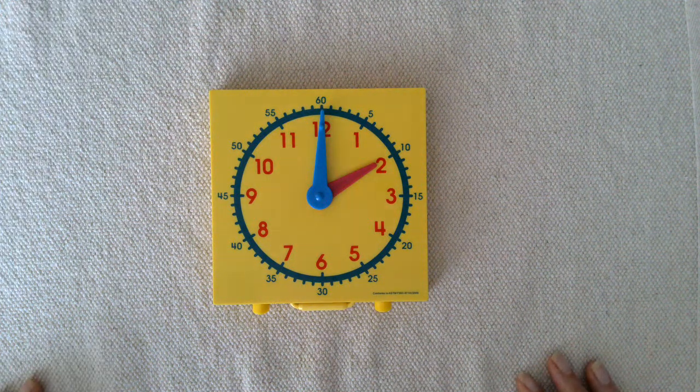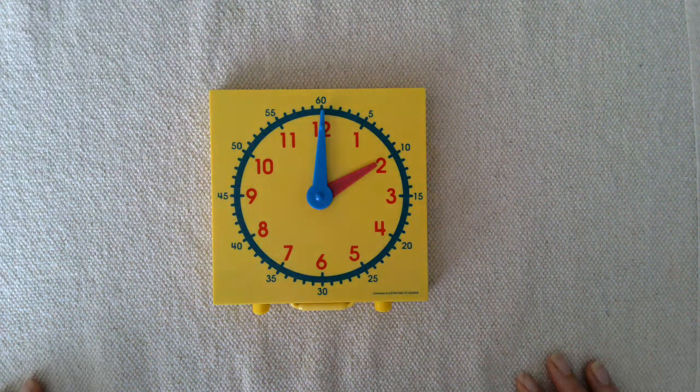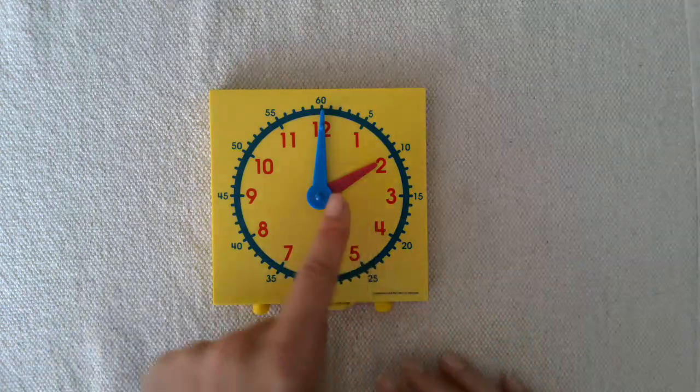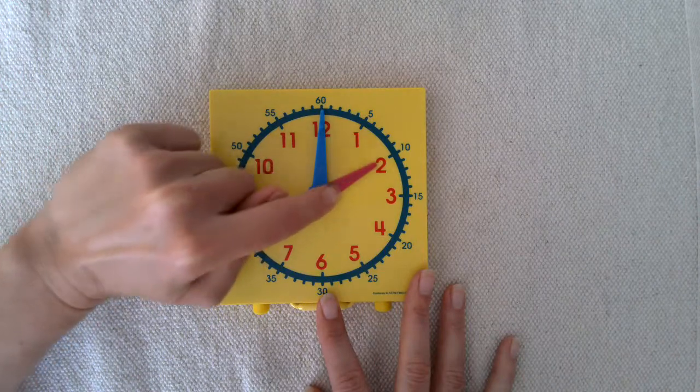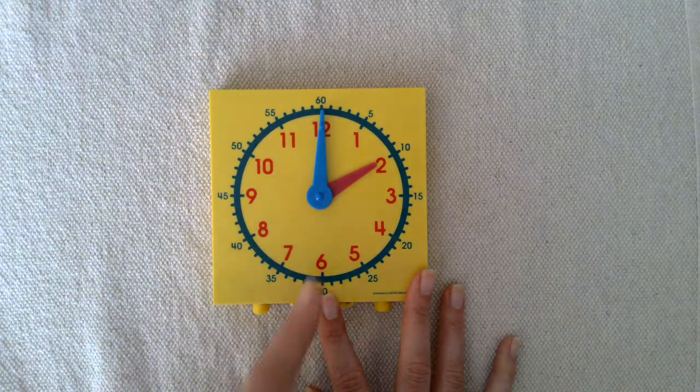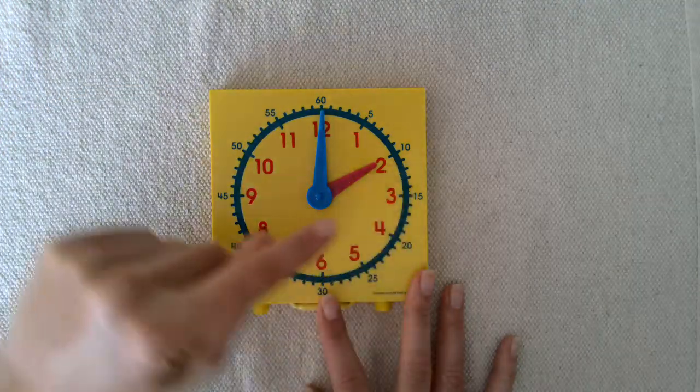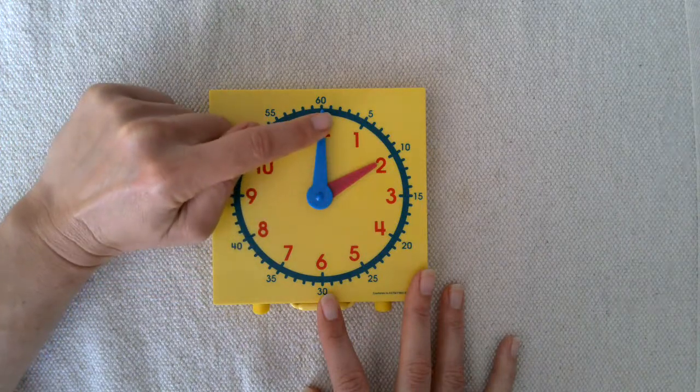In today's video we'll look at reading time in five-minute increments. Right now my clock face shows two o'clock. The hour hand is pointing to the two and the minute hand is pointing straight up.